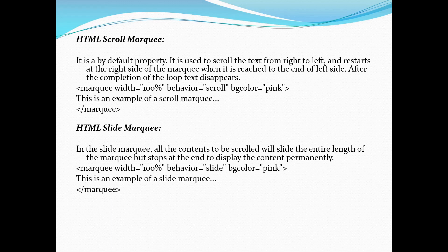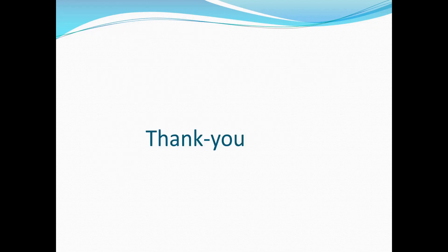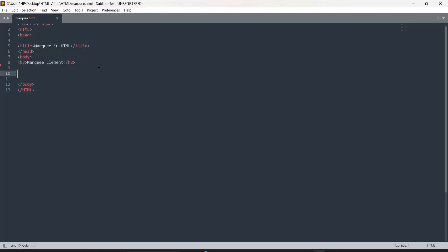When you use the marquee element, it scrolls text across the screen, starting from one corner and going to another. You write the marquee tag with the behavior attribute set to scroll, and you can change the background color. You can also do the same for the slide behavior. The direction attribute specifies which direction you want the text to start scrolling.